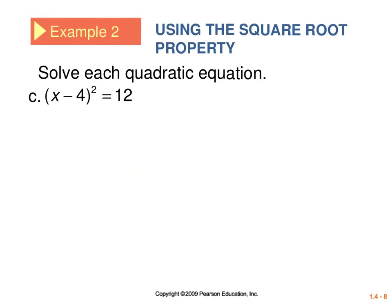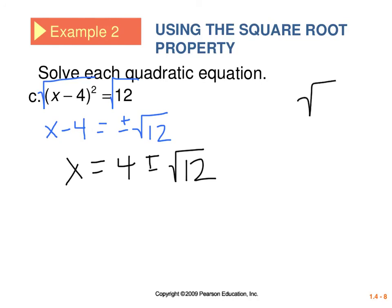And again, I have a binomial squared equals 12. So I can take the square root of each side, and I get x minus 4 equals plus or minus the square root of 12. And then I'm going to get x alone by adding 4 to each side. So I get a result of x equals 4 plus or minus the square root of 12. And I can reduce the square root of 12, or simplify the square root of 12, I should say. Because 12 is 4 times 3, and the square root of 4 is 2. So this is going to become x equals 4 plus or minus 2 root 3.